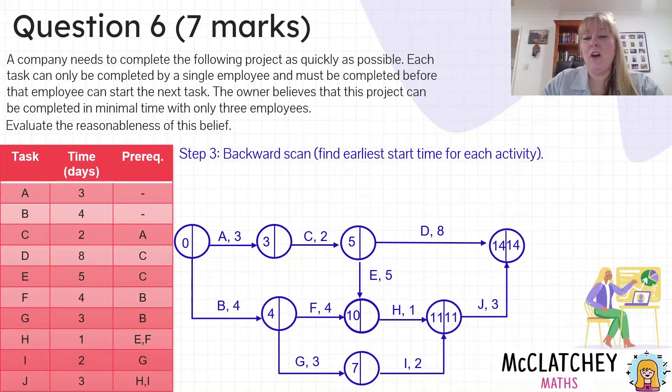If I move along activity I now, 11 take away two gives me nine. I'm now going to move along the middle pathway. 11 take away one gives me 10 with activity H, and I'm sort of reaching this point now where I have to make decisions. So I'm going to move back along the top now. 14 take away eight is my first choice, that's six. However, if I come backwards, 10 take away five is five, and I need to choose the lowest. When you're forward scanning you choose the highest of two choices, and when you backwards scan you choose the lowest of the two choices.